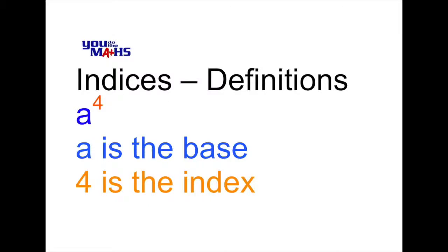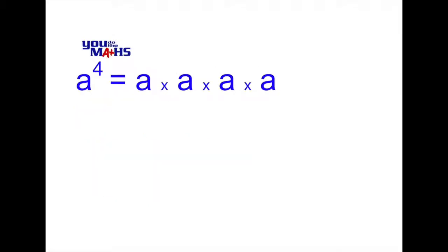Here we have a to the 4, which means multiply a out four times: a multiplied by a multiplied by a multiplied by a.